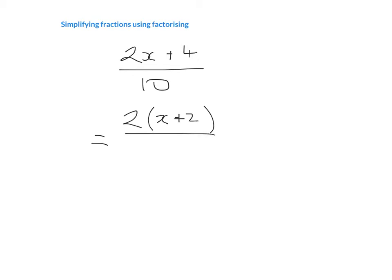I do the same on the bottom of my fraction. I say how does 2 divide into 10? And that's going to go 5 times. Therefore, on the top and the bottom of my fraction, we have the number 2. They are going to divide into each other and we'll be left with 1. So therefore, my answer will be x plus 2 over 5.